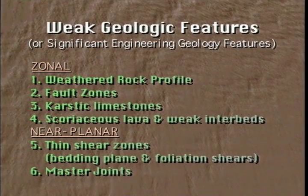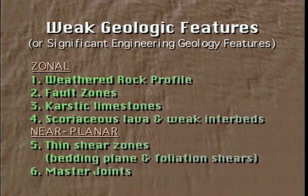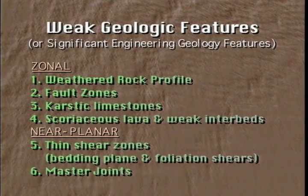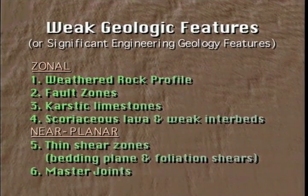These significant engineering geology features exert their influence on dam behavior because they significantly affect one or more of the in-situ rock mass properties of modulus, shearing resistance, or permeability. Four of the features are three-dimensional or zonal in aspect: weathered rock and the weathered rock profile, fault zones, karstic limestone, and interbedded volcanics with scoriaceous lava or weak clay tuff. The other two significant features are narrow and of near-planar aspect: thin shear zones and master joints.